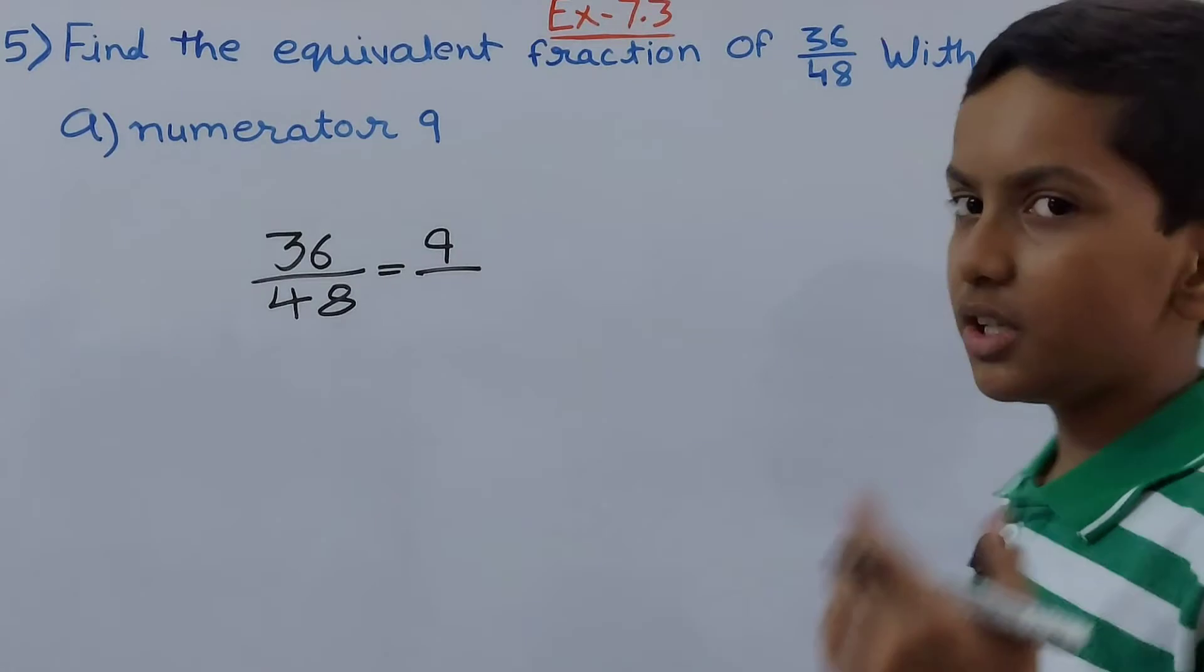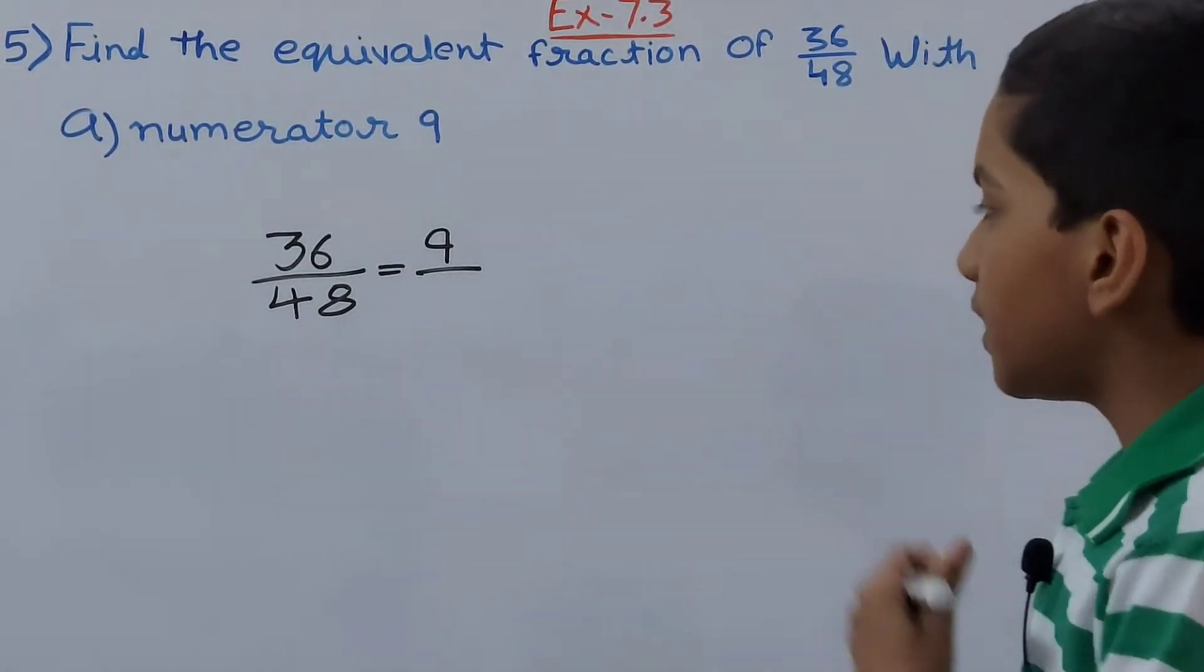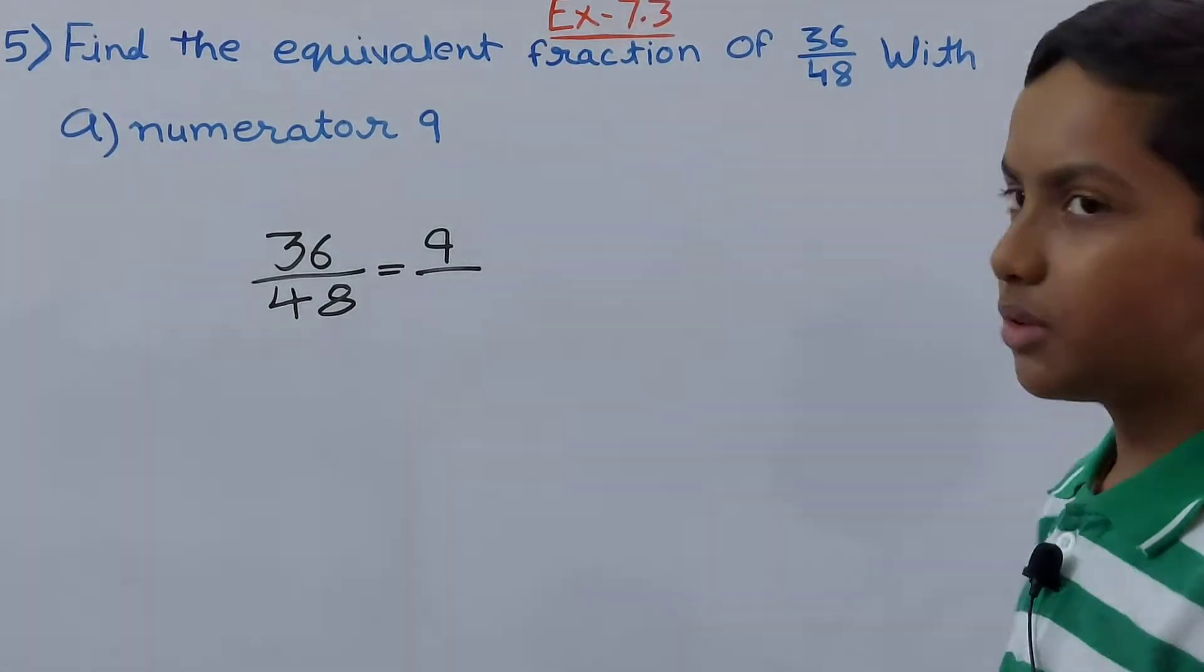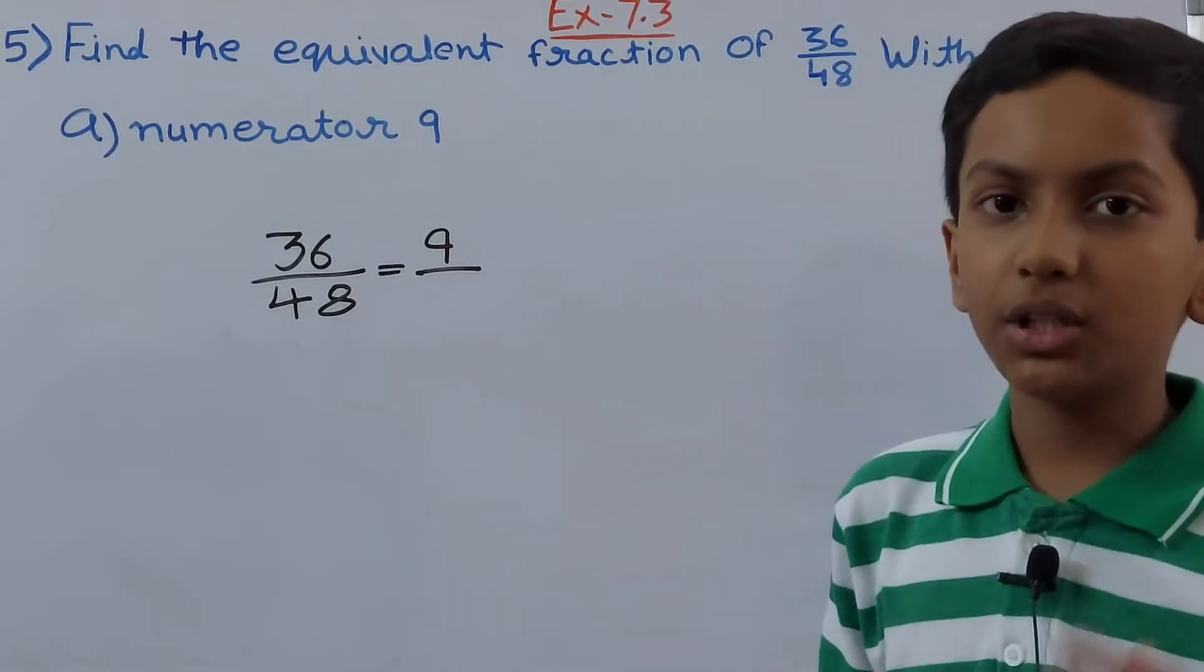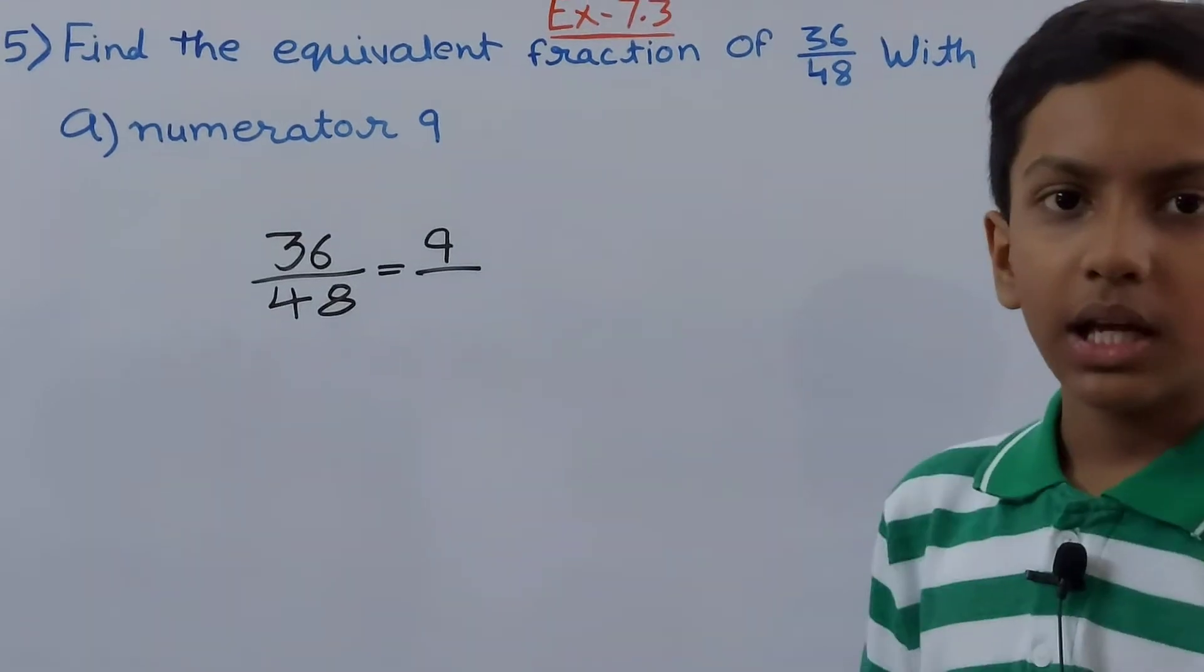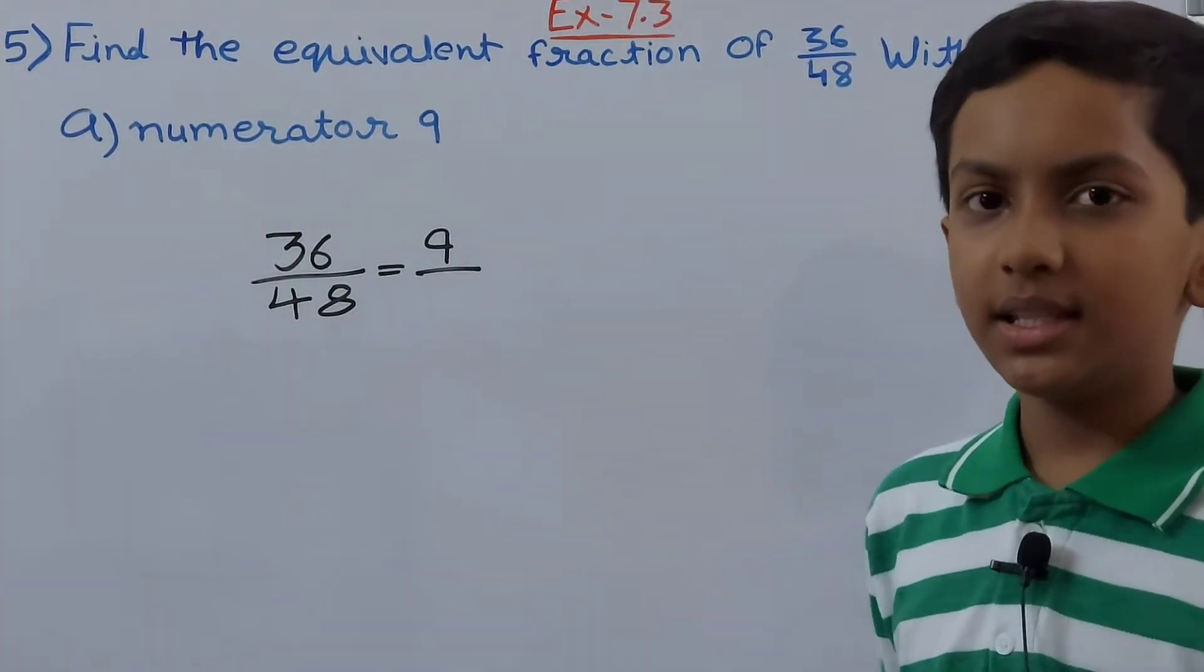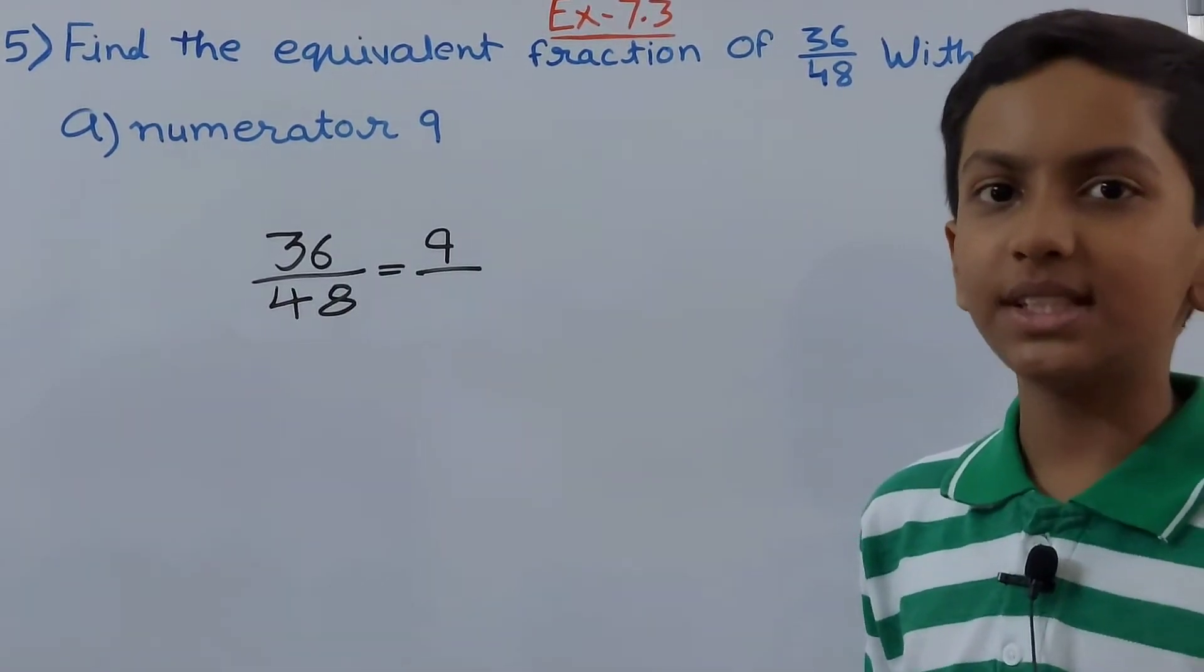First you need to know what will come in the denominator to complete this. As we have numerator 9 given to us, we need to know what we have to do to find the equivalent fraction, multiply or divide, because there are two ways to do it. Does 36 is a multiple of 9? Yes, 9 into 4 is 36.